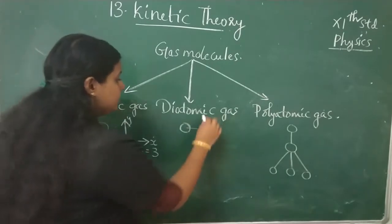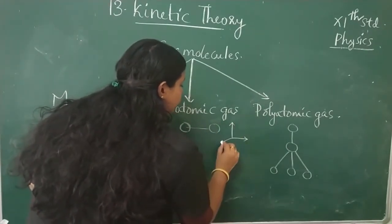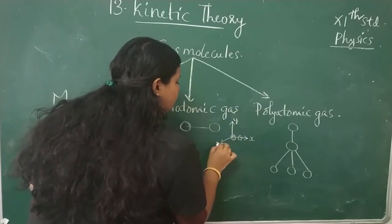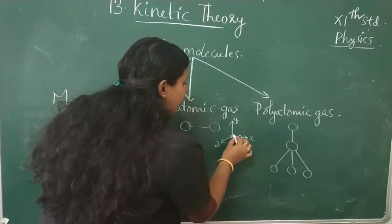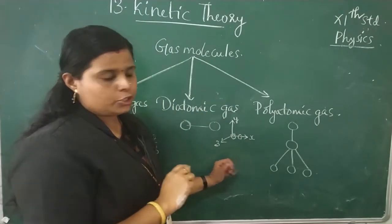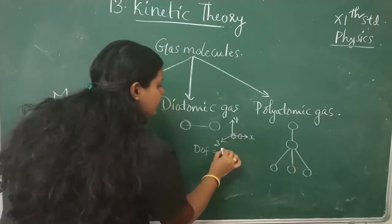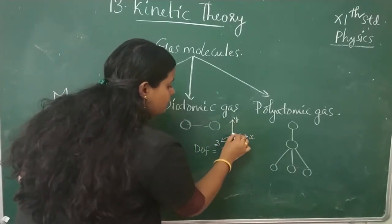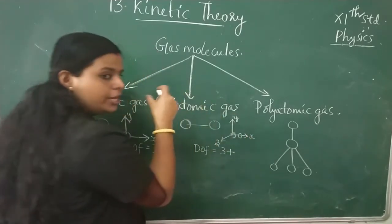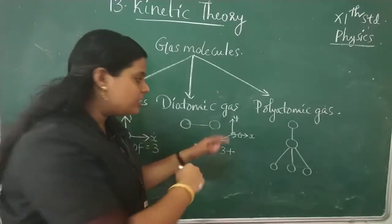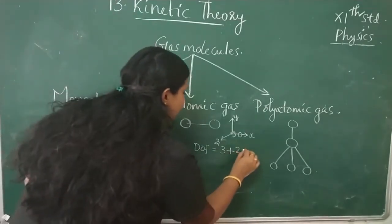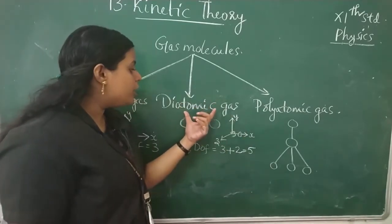For a diatomic gas or diatomic molecule, the molecule can move in the X, Y, and Z directions — giving 3 translational degrees of freedom. Additionally, it can rotate about the Y axis and Z axis, giving 2 rotational degrees of freedom. So the total degrees of freedom for a diatomic molecule is 3 + 2 = 5.